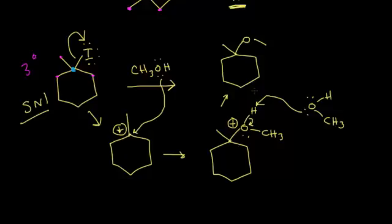This is how to approach SN1 versus SN2 reactions. First, look at the structure of your alkyl halide. Then consider whether you need to examine your nucleophile and solvent to determine the mechanism type. Run through the whole mechanism and think about stereochemistry. Then you finally end up with your product. There's a lot involved with SN1 versus SN2 reactions, but if you follow these steps, it should make it a lot easier.